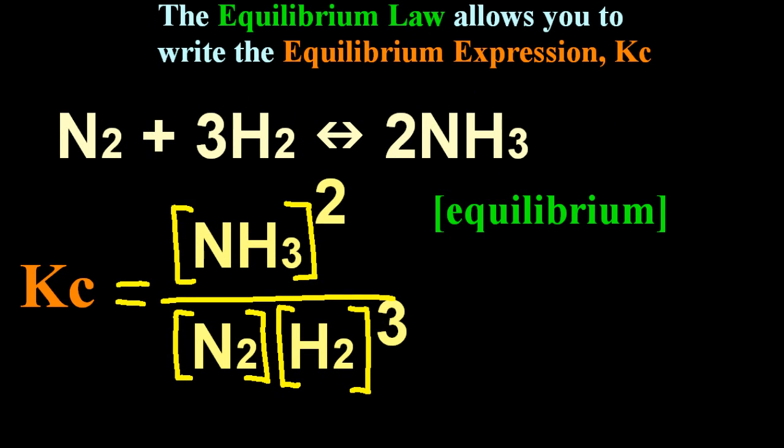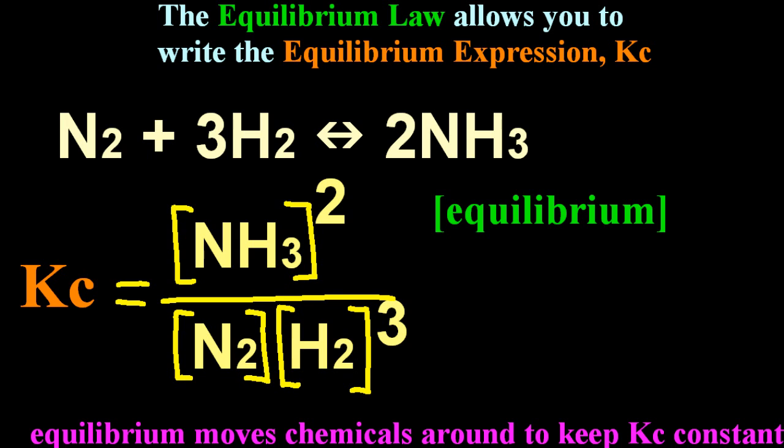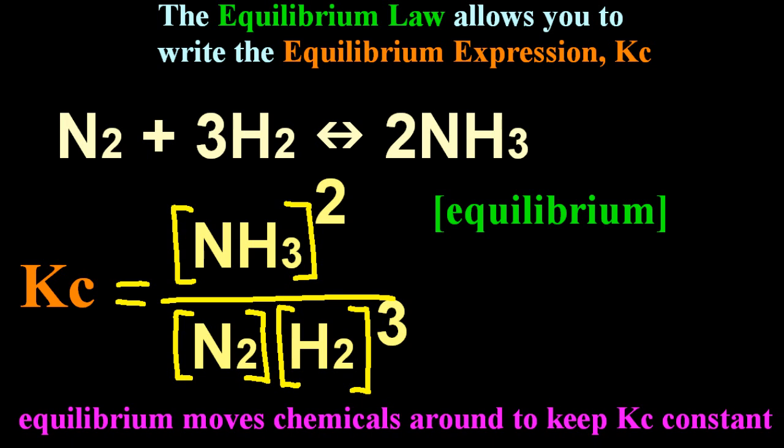Square brackets means concentration. And so if Kc is a constant, you can see that if you add chemicals or remove chemicals, everything's going to adjust itself. The chemicals are going to move around to keep Kc constant. And that was a huge discovery way back when.